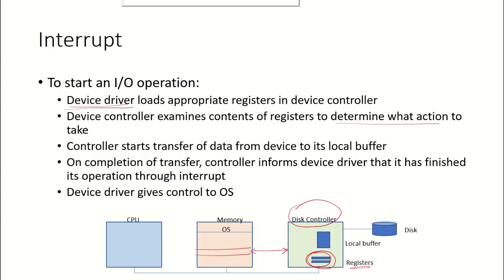After determining what action is to be taken, the controller will start the transfer of data from the device to its local buffer. If it is a read operation, data is transferred from the disk onto the local buffer. Once the data has been transferred into the local buffer, the controller is given control of memory for direct memory access. After the complete transfer of data has taken place, the device driver informs the OS that it has finished its task and gives control back to the operating system. The OS then resumes the task that was initially interrupted and the CPU continues its previous work.